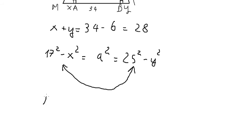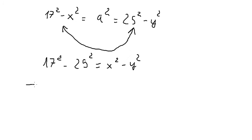We have 17 squared minus 25 squared equals x squared minus y squared. This gives us negative 336. This can be written as x minus y multiplied by x plus y.